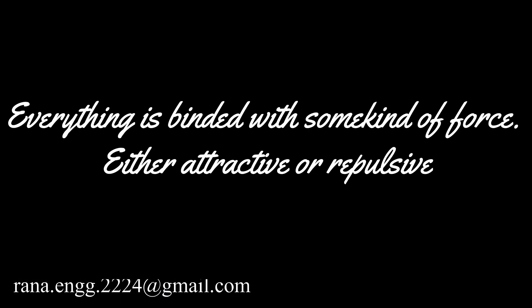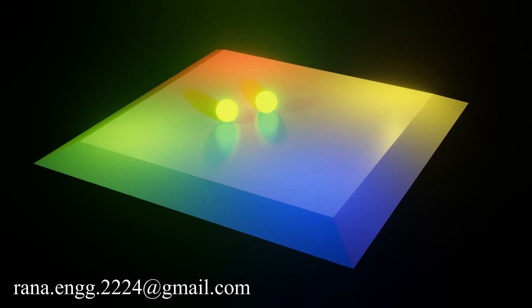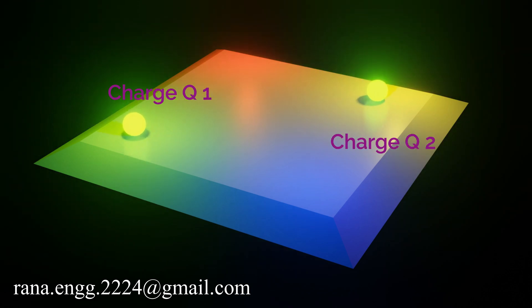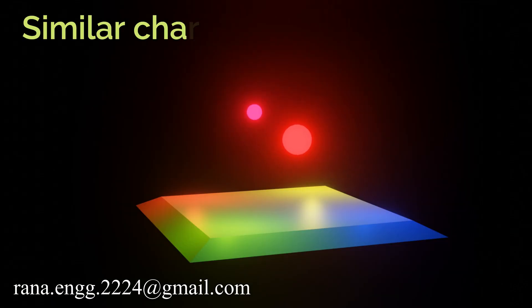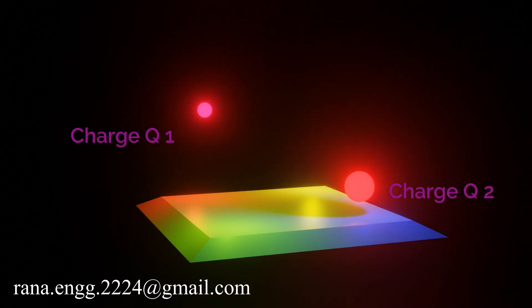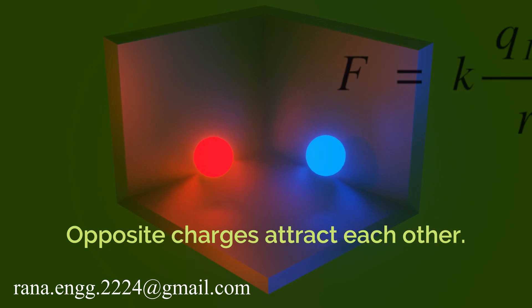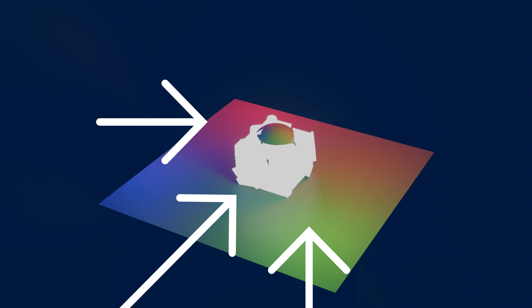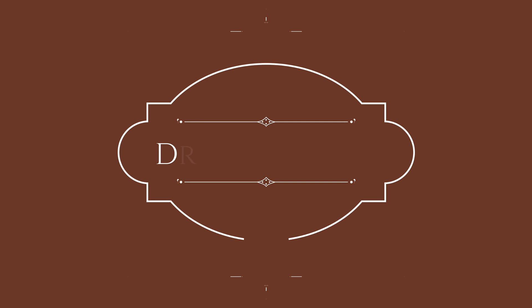Coulomb's law is an experimental law of physics that quantifies the amount of force between two stationary electrically charged particles. As we know, similar charges repel each other — we have charge one (q1) and charge two (q2) here. If they are having the same polarity, they will repel each other. If the charges are opposite in nature — one positive and one negative — they will attract each other, as we can see in this animation.